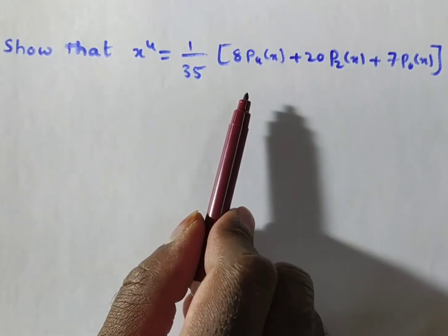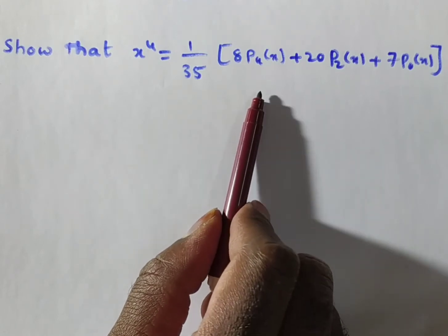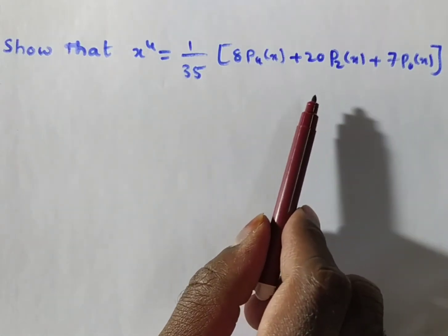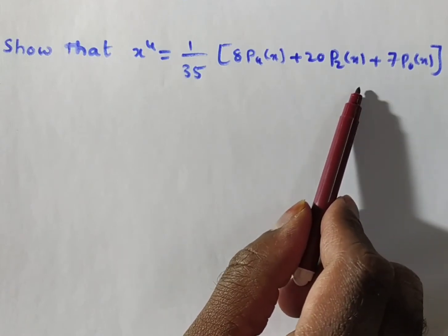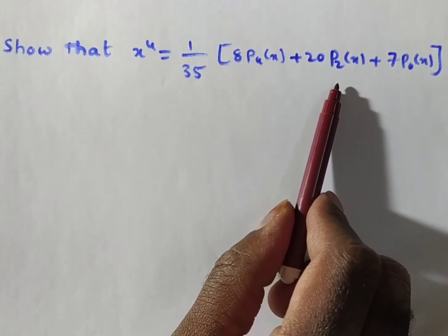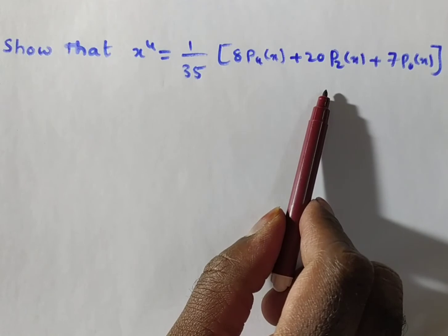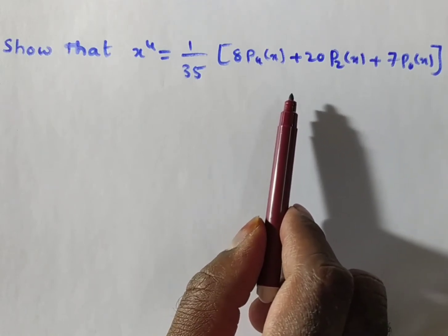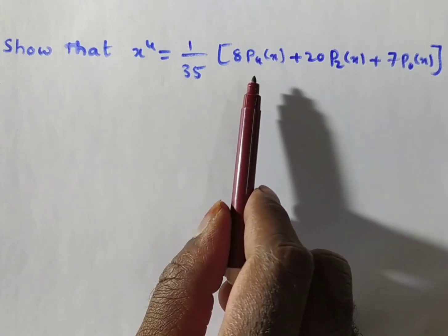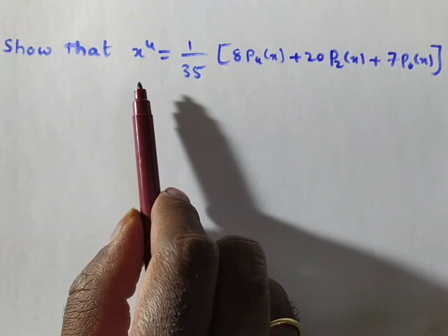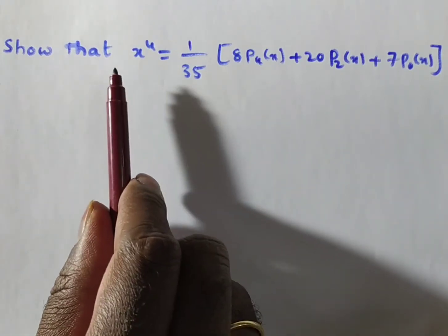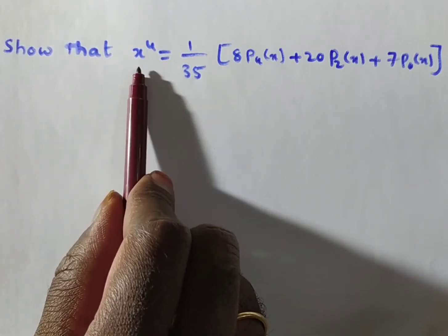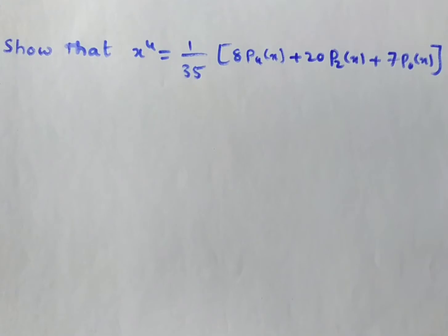Friends, till now we have done problems expressing Pₙ(x) in terms of algebraic polynomials — like P₀ = 1, P₁ = x, P₂ = (1/2)(3x² - 1), P₃ = (1/2)(5x³ - 3x), and P₄ also in terms of x⁴. But what we are doing now is the reverse: expressing the algebraic function x⁴ in terms of Legendre polynomials.